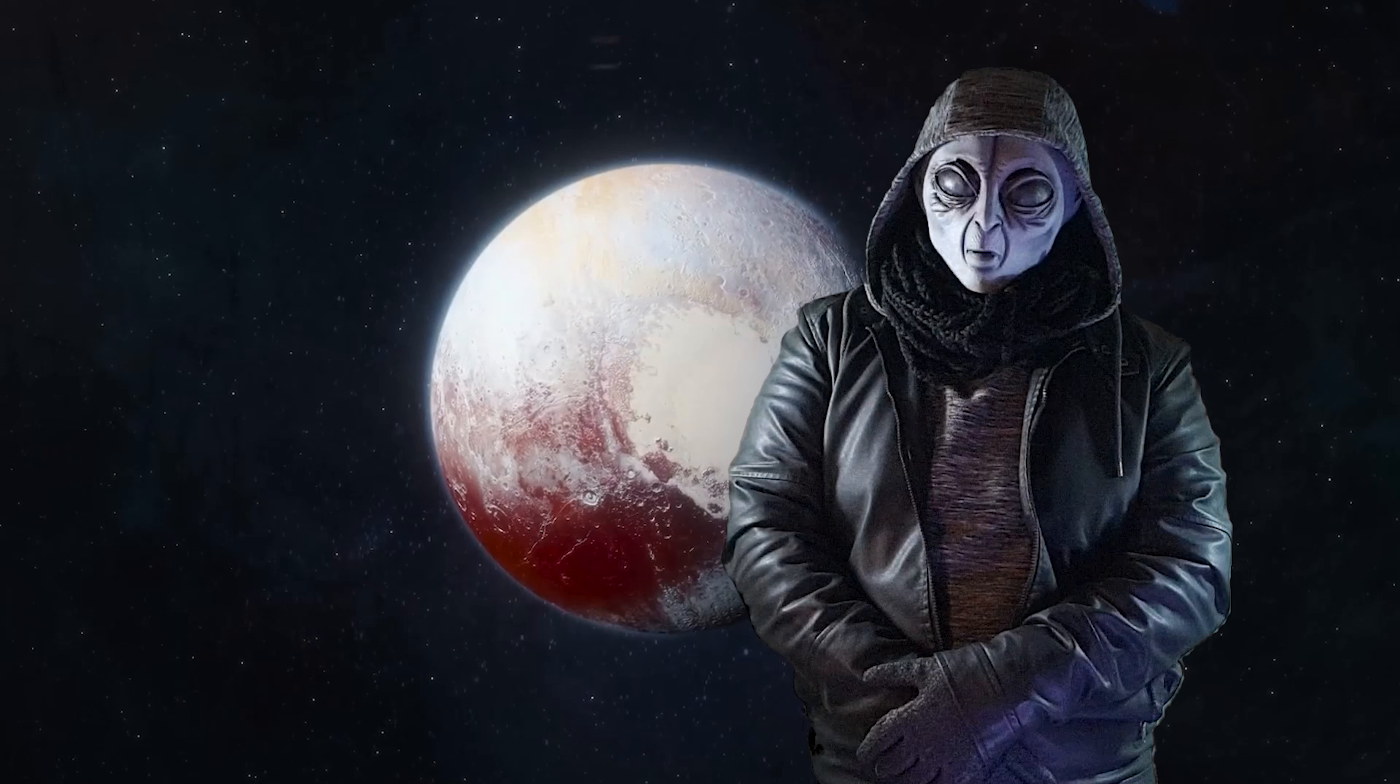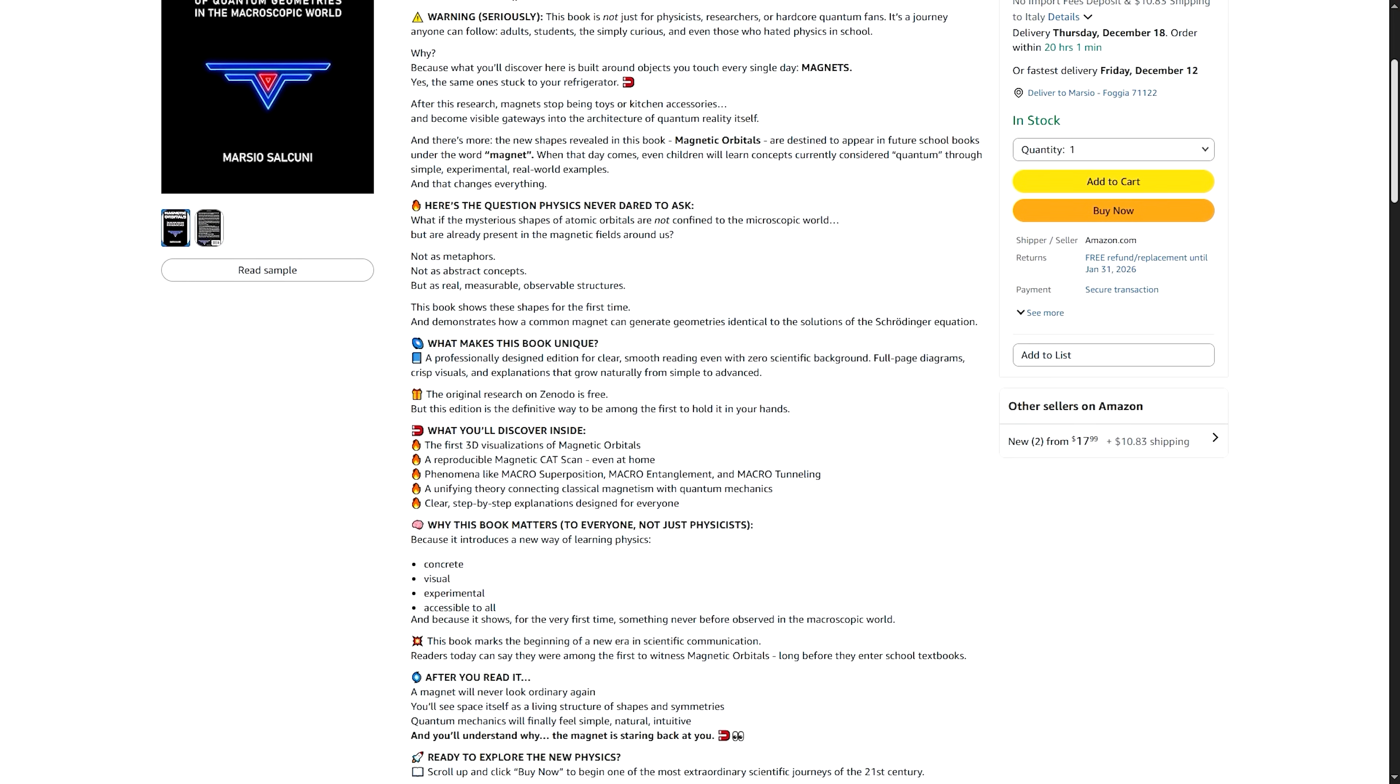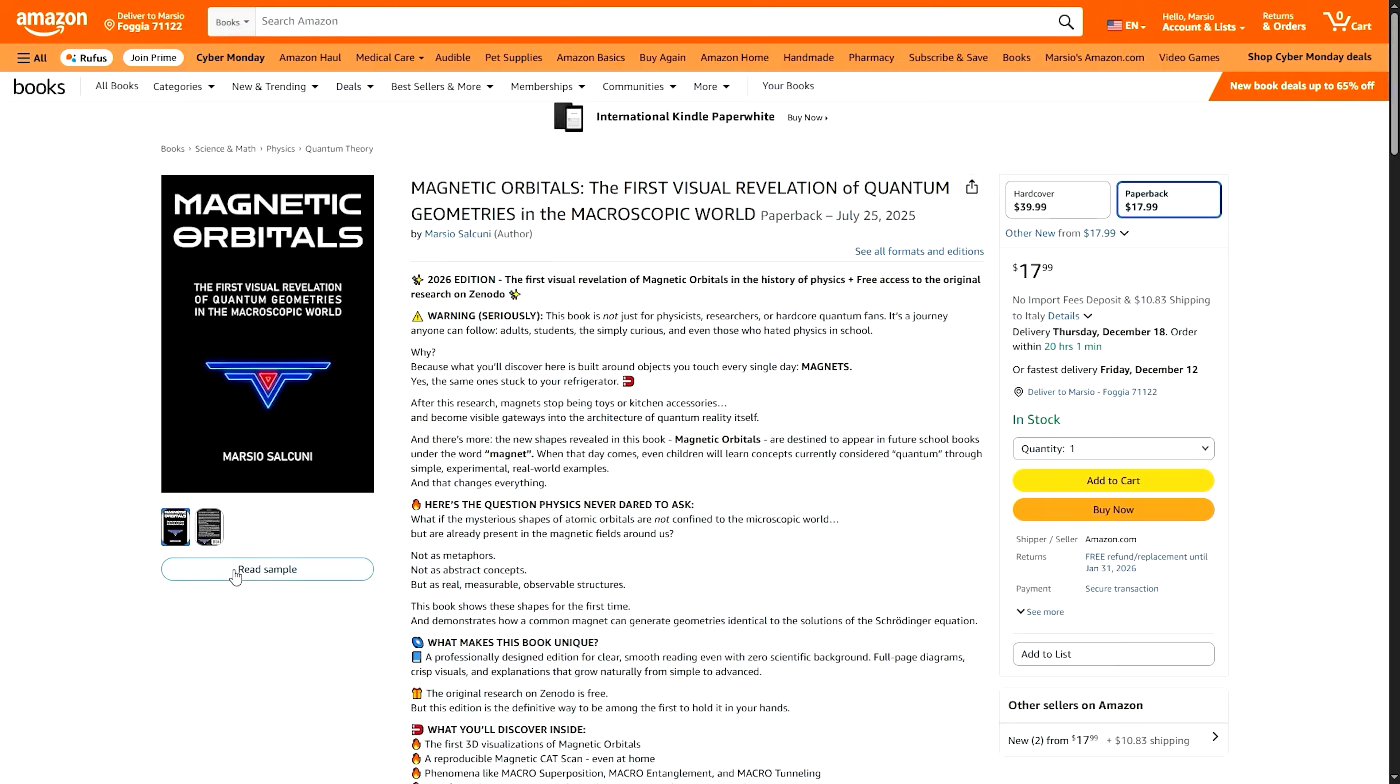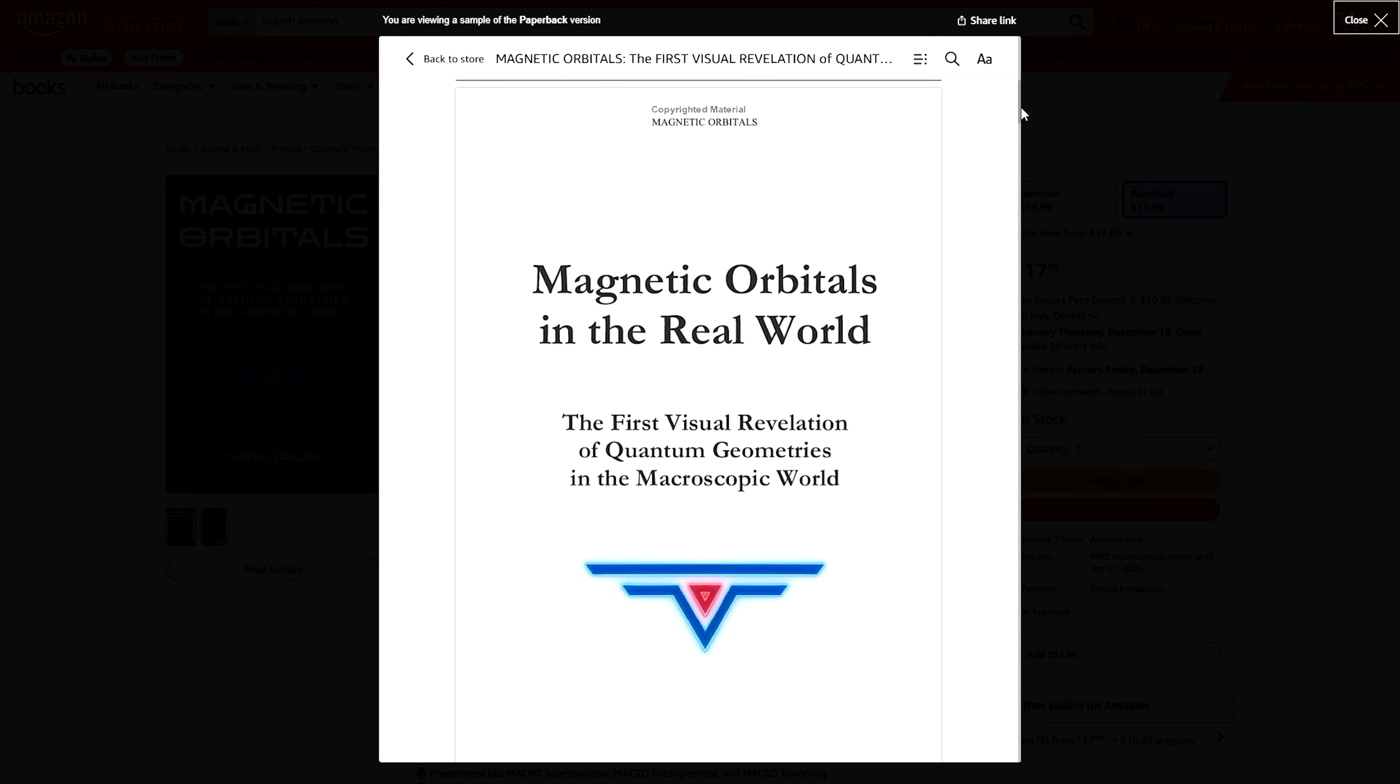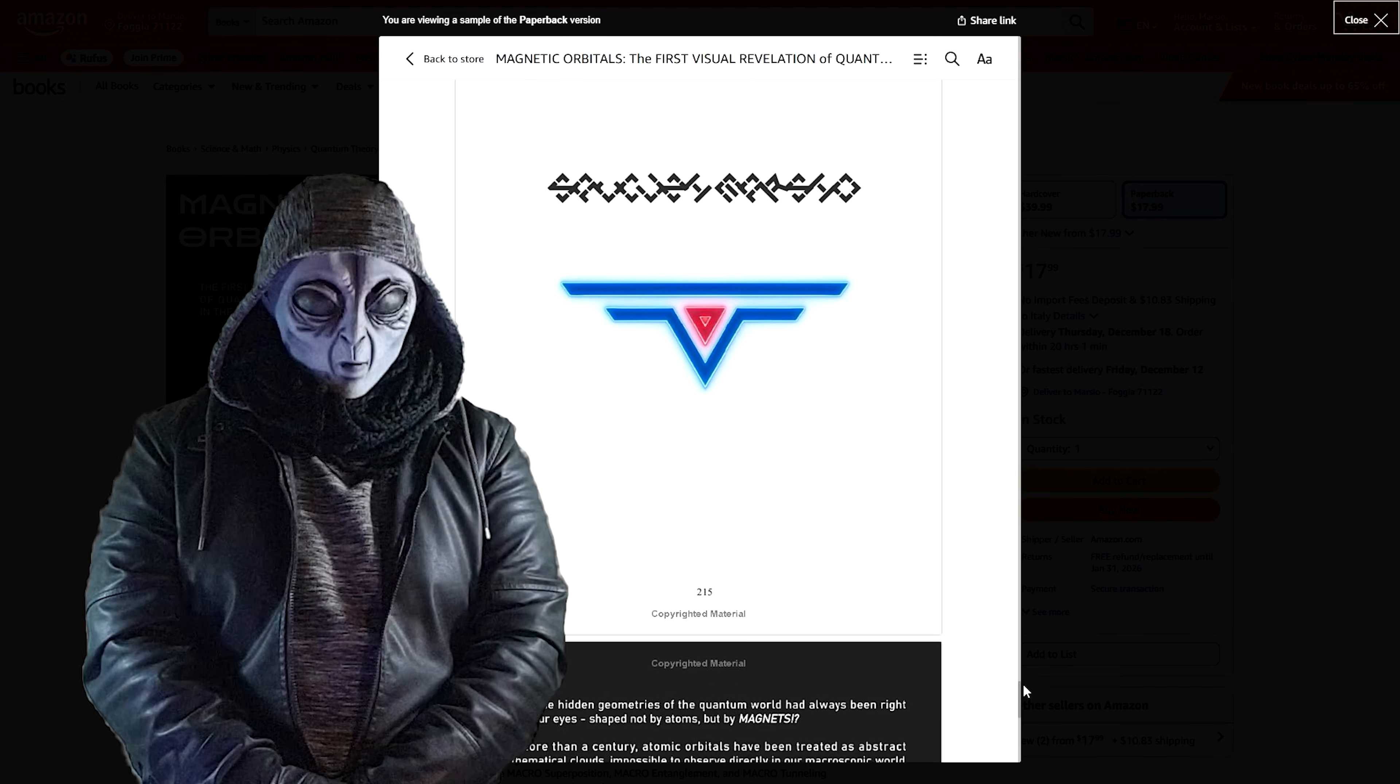But there is much more than that. In fact, let me remind you that the new edition of the book on magnetic orbitals has finally landed on Amazon, available across your entire planet. It is the printed version of the research, polished in every detail, and designed to bring you the first visual revelation of quantum geometry in the macroscopic world. If you wish, by getting it, you can support Marcio's work. Go take a look. And thank you for your support.